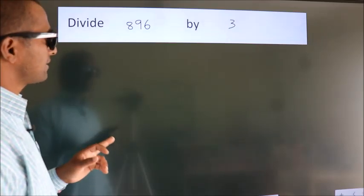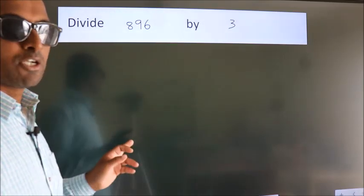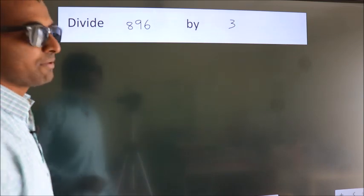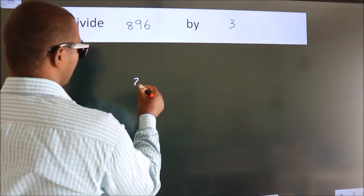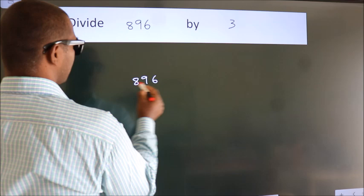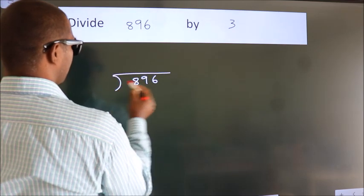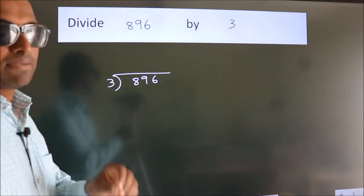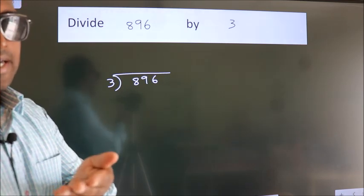Divide 896 by 3. To do this division, we should frame it in this way: 896 here, 3 here. This is your step 1.